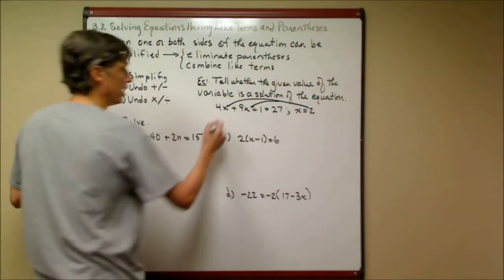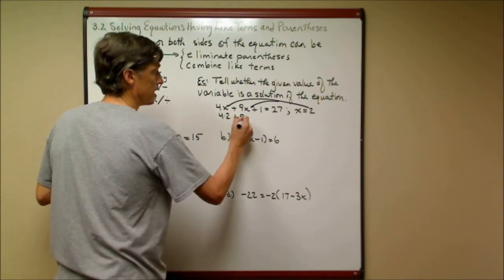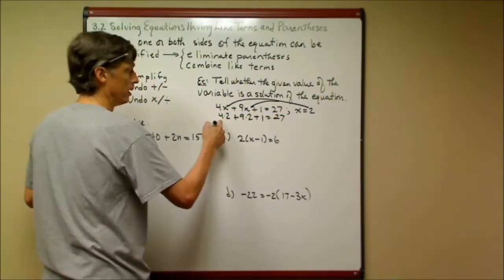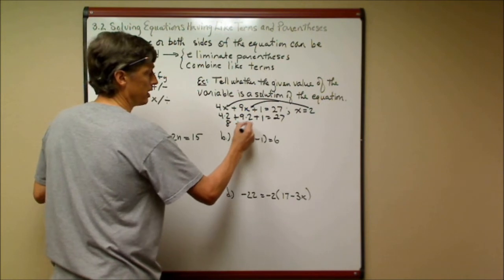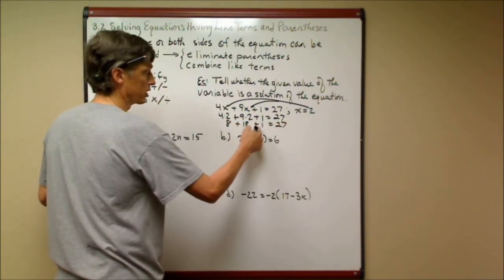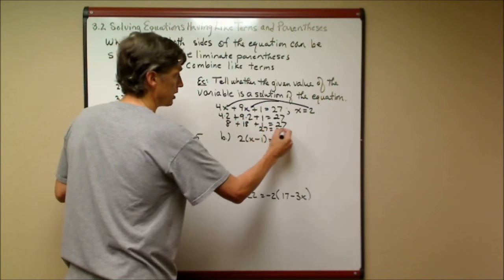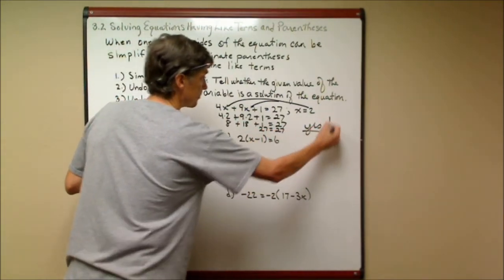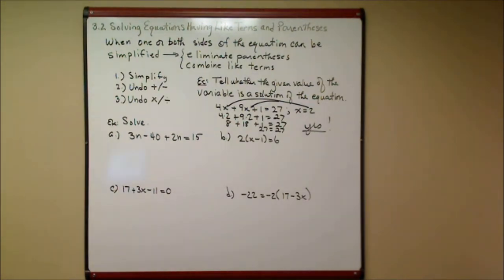That's how we solve. It's kind of like our check. This is 4 times 2 plus 9 times 2 plus 1. Does that equal 27? This is 8 plus 18 plus 1 equals 27. 8 and 18 is 26 and 1. 27 equals 27, so yes. That is indeed a solution of that equation.